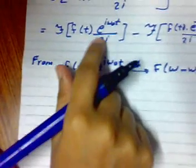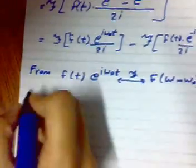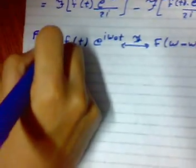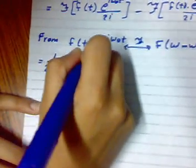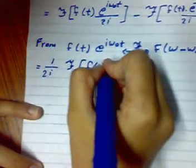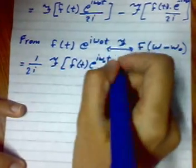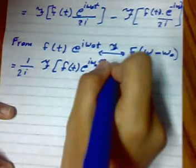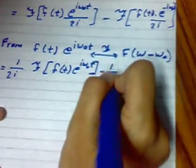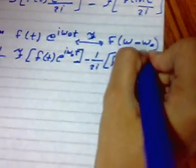So this is a constant you get out from the Fourier transform. So 1 over 2i, Fourier transform of f of t multiply exponential i omega naught t, minus 1 over 2i, f of t exponential minus i omega naught t.